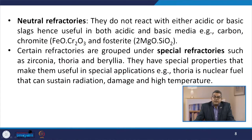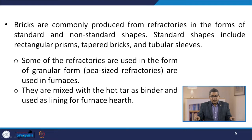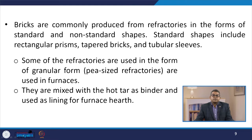Certain refractories are grouped under special refractories, such as zirconia, thoria, and beryllia. They have special properties that make them useful in special applications — for instance, thoria is a nuclear fuel that can sustain radiation damage at high temperatures. Bricks are commonly produced from refractories in standard and non-standard shapes, including rectangular prisms, tapered bricks, and tubular sleeves. Some refractories are used in granular form — pea-sized refractories used in furnaces — mixed with hot tar as binder for furnace hearth lining.